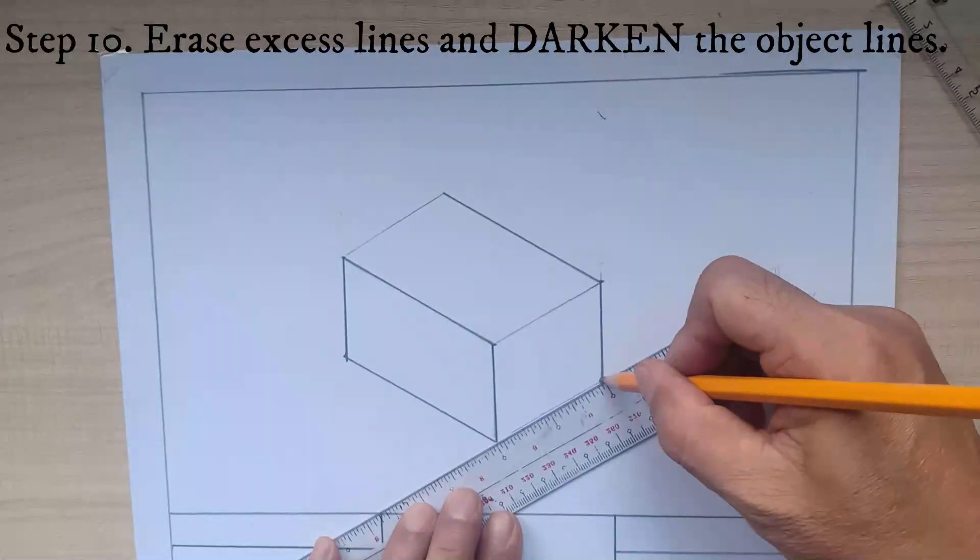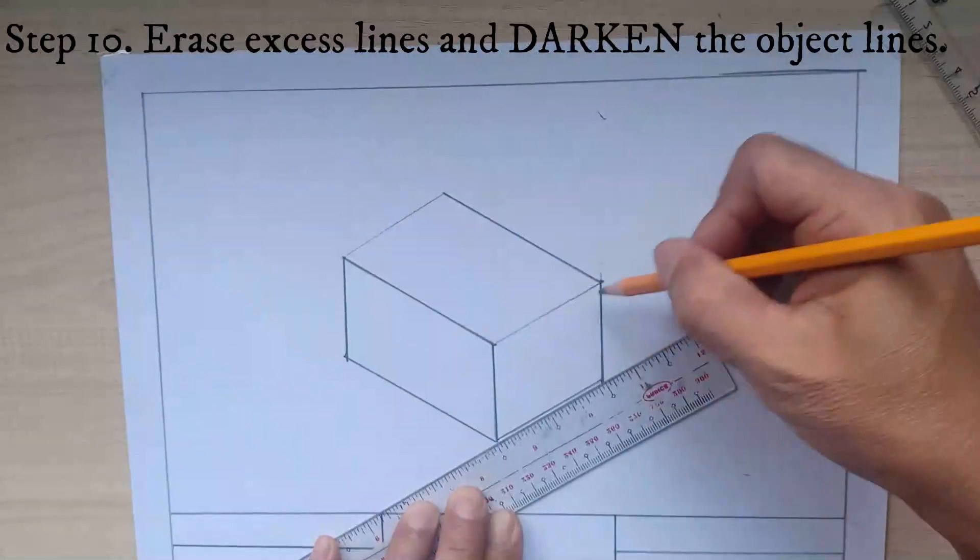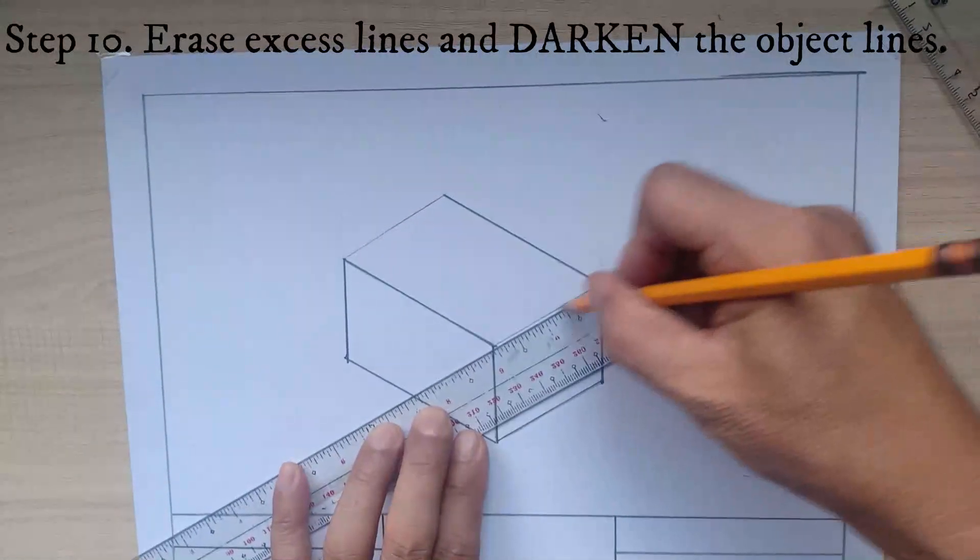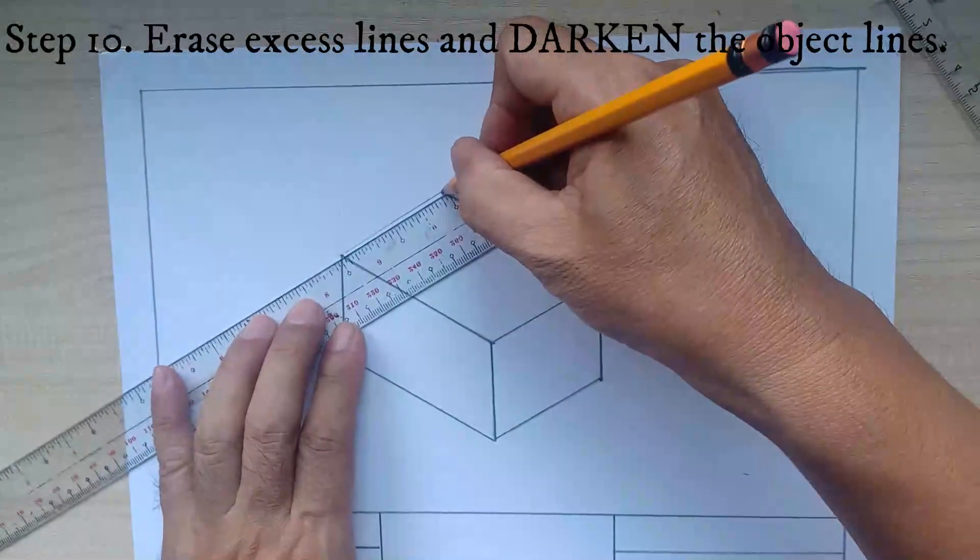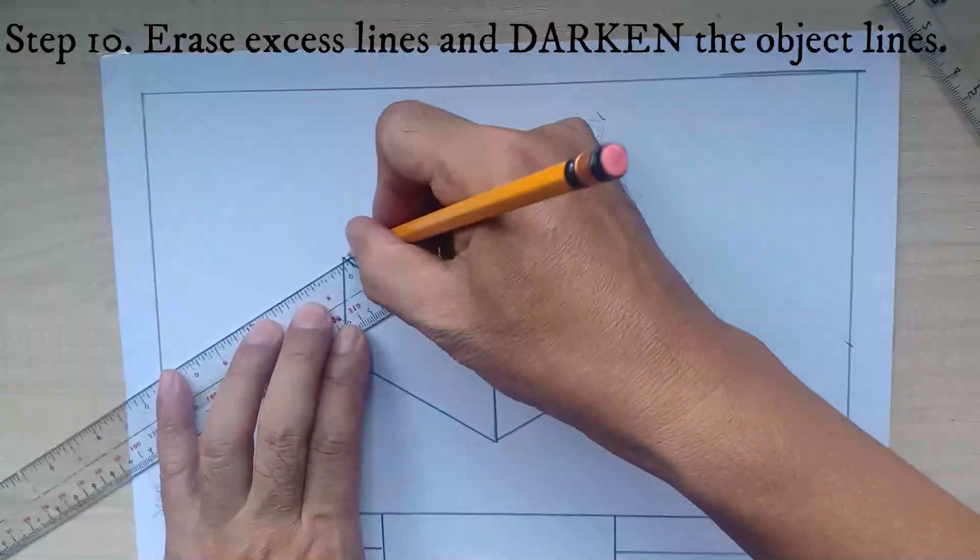So those are the steps on how to make an isometric drawing. Take note that all inclined lines are drawn at 30 degrees from the base and all vertical lines are 90 degrees.